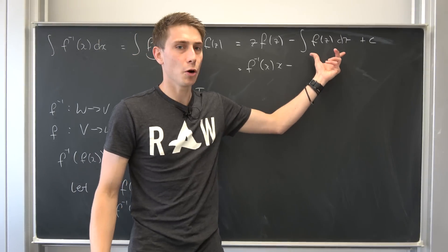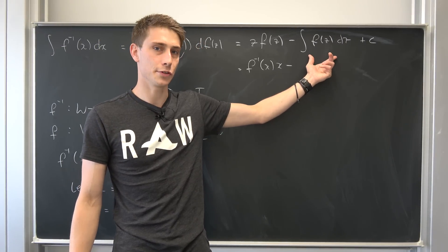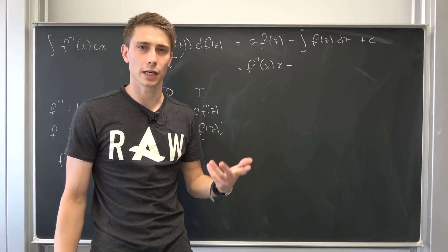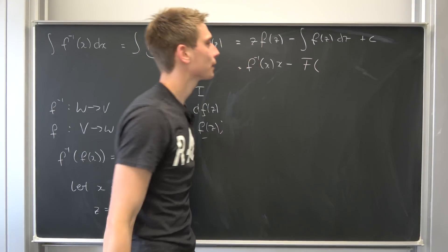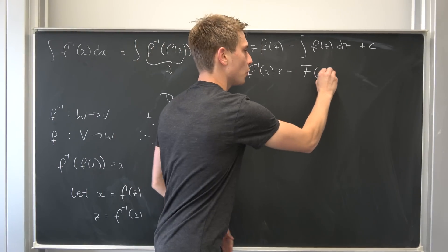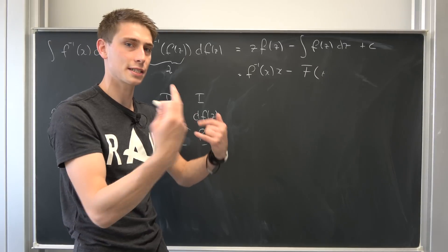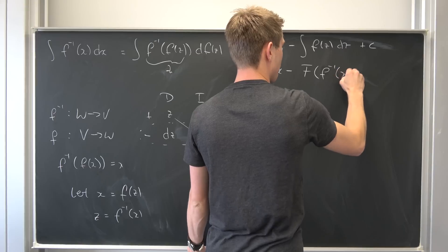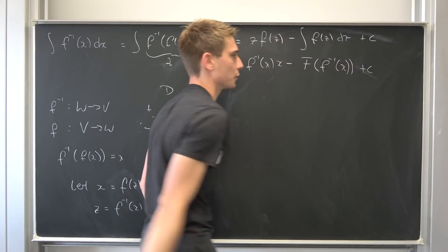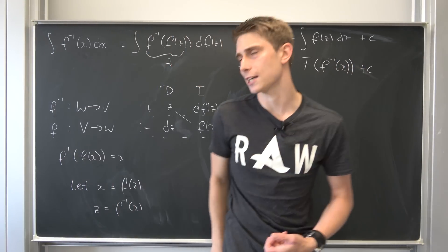And at this point we have to suppose that there's a primitive to this integral right here. We are just going to call it capital F. F of, and that would be f of z at this point. But what is z? This is just the inverse function of x. Plus some arbitrary constant c. And then we are basically done at that point.